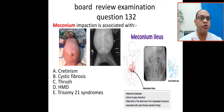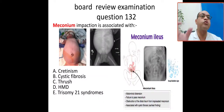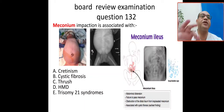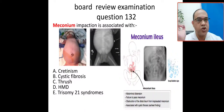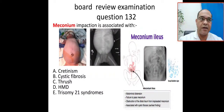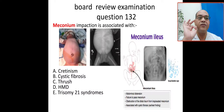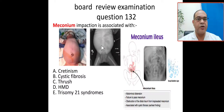This question is common on the Arab board, Saudi board, Jordanian board, and Egyptian board. It concerns meconium ileus or meconium impaction. What is the classic sign of meconium ileus or meconium impaction, and what is the common association? Meconium impaction is a small bowel obstruction — a non-mechanical small intestinal obstruction.